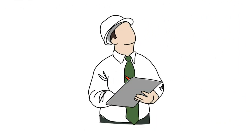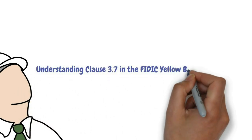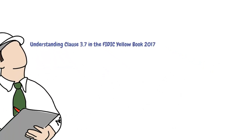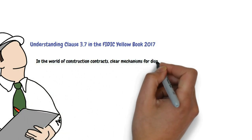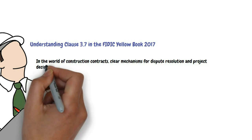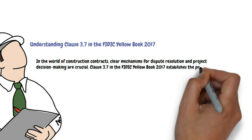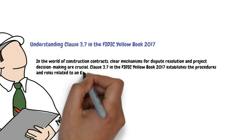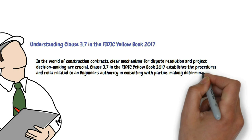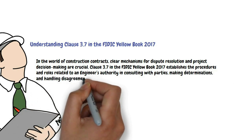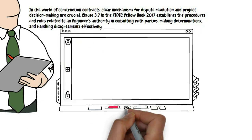Understanding Clause 3.7 in the FIDIC Yellow Book 2017. In the world of construction contracts, clear mechanisms for dispute resolution and project decision-making are crucial. Clause 3.7 establishes the procedures and roles related to an engineer's authority in consulting with parties, making determinations, and handling disagreements effectively. Here's a breakdown of each of the five sub-clauses within Clause 3.7.